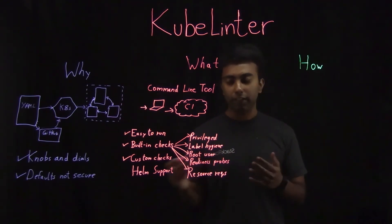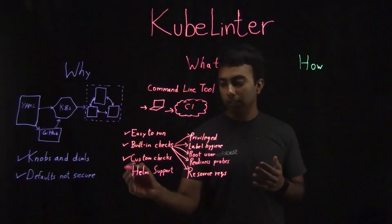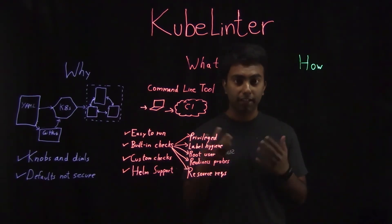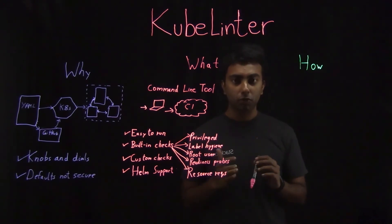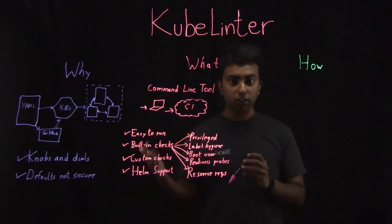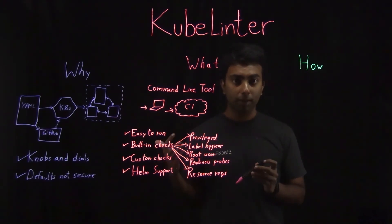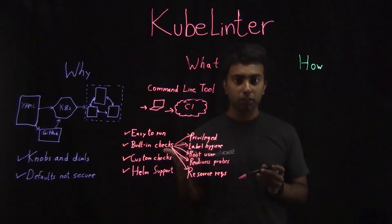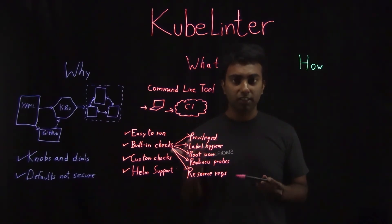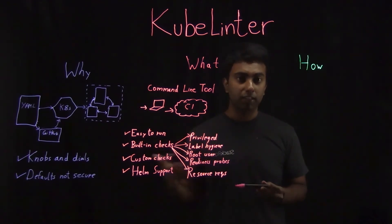And finally, KubeLinter has Helm support baked right in, which means that you can lint not just your Kubernetes YAML files that you submit, but also your Helm charts, which is how most organizations actually manage their configurations.